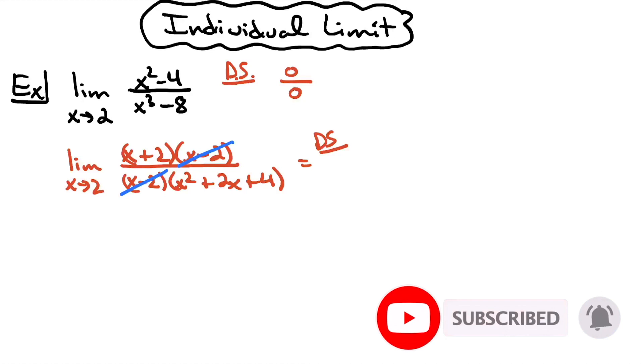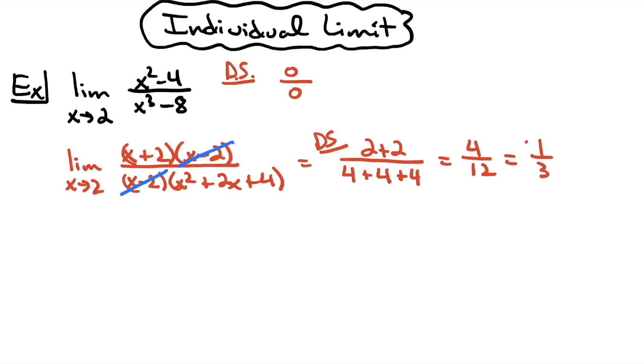So at this point, I'm going to do a direct substitution. My limit notation is going to go away. I'm going to have a 2 plus 2 in my numerator. In the denominator, plugging in that 2, I'm going to have a 4 plus 4 plus 4, which is going to give me a straight 4 over 12. Reduced to lowest terms is going to give me one-third.